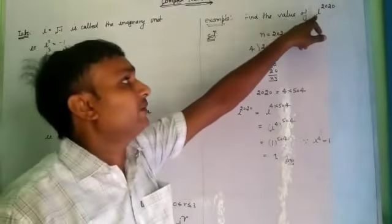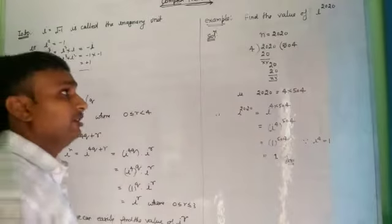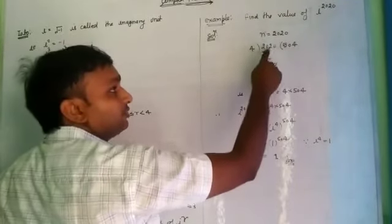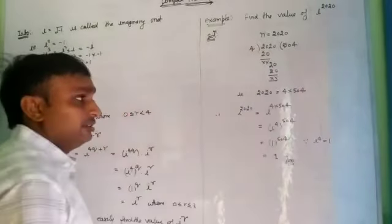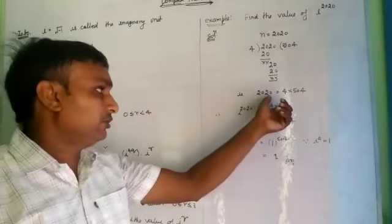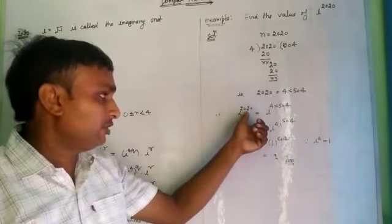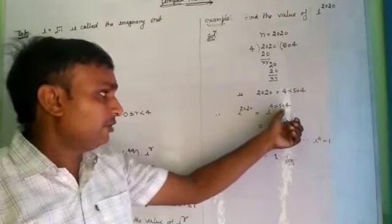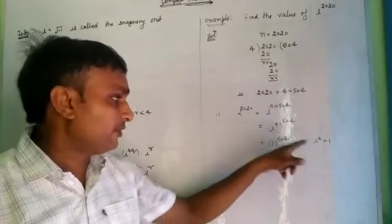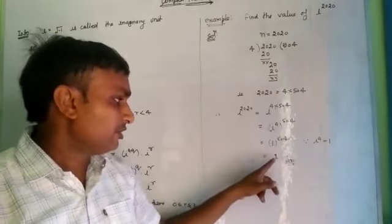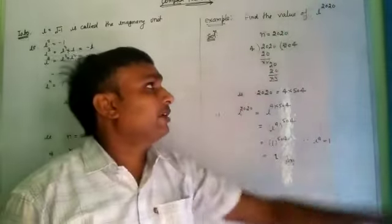Example: Find the value of i to the power 2020. Using this method, here n equals 2020. Dividing 2020 by 4, we get quotient 504 and remainder 0, so r equals 0. Therefore 2020 equals 4 times 504, and i to the power 2020 equals i to the power 4 times 504, equals i to the power 4, all raised to 504, equals 1 to the power 504, which equals 1.